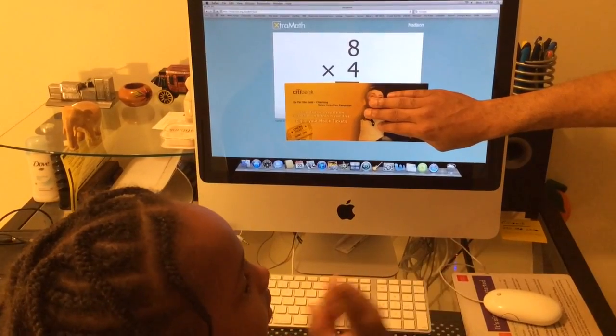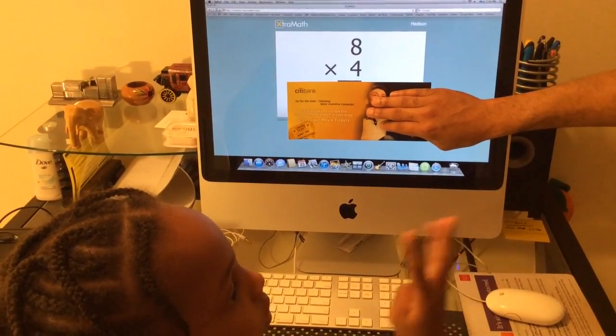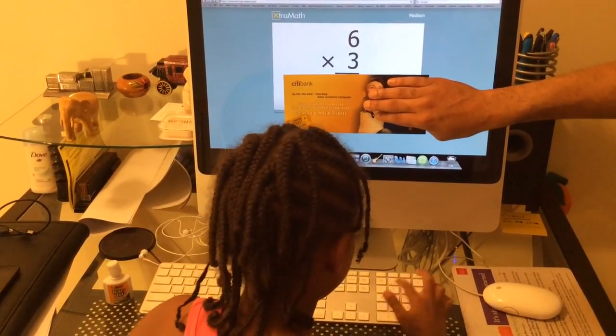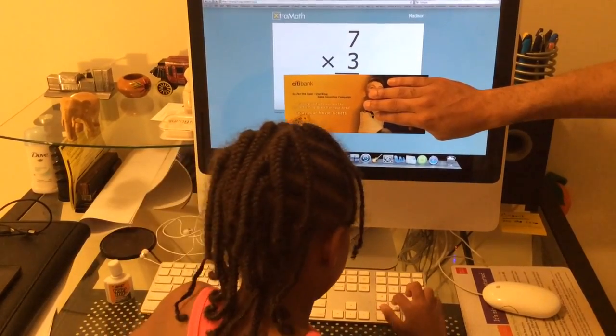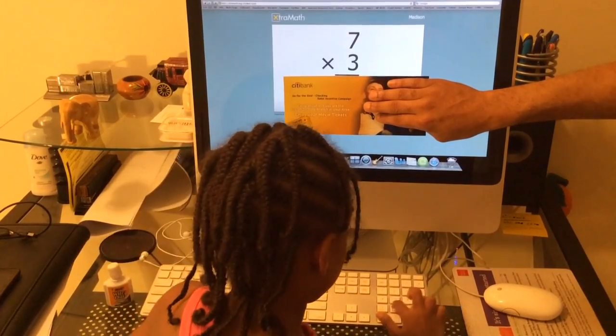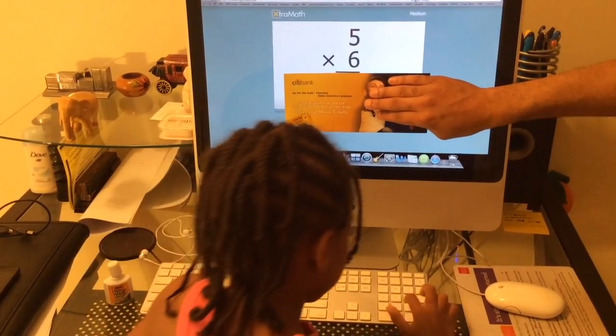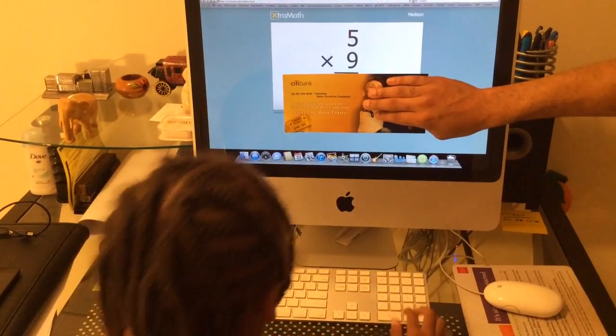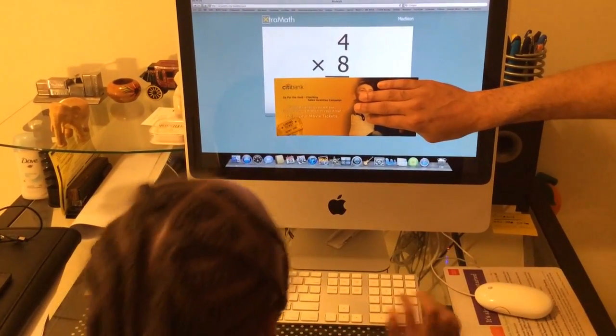What was that one? Eight, sixteen, twenty-four, thirty-two. Very good, Madison. Seven times nine? One, two, three, four, five, seven... eight, ten, four.